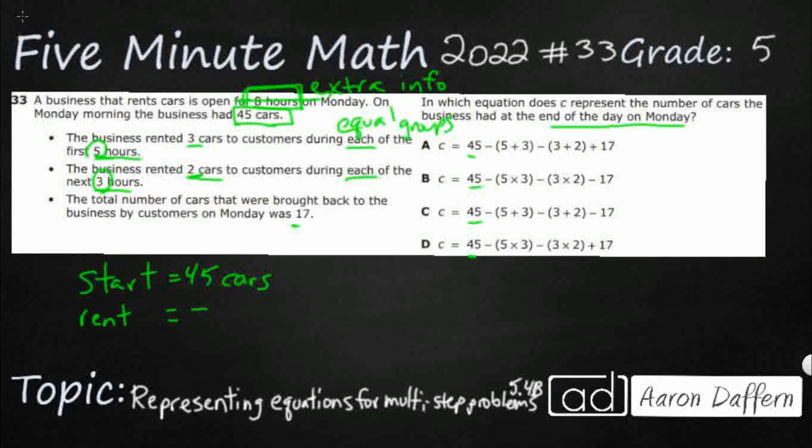So I've got three cars during each of the first five. So I've got three times five, or you could do five times three. It doesn't really matter. Three cars during each of the first five. And then we're going to rent, so that means we're going to take away two cars during each of the next three. You could do three times two or two times three.